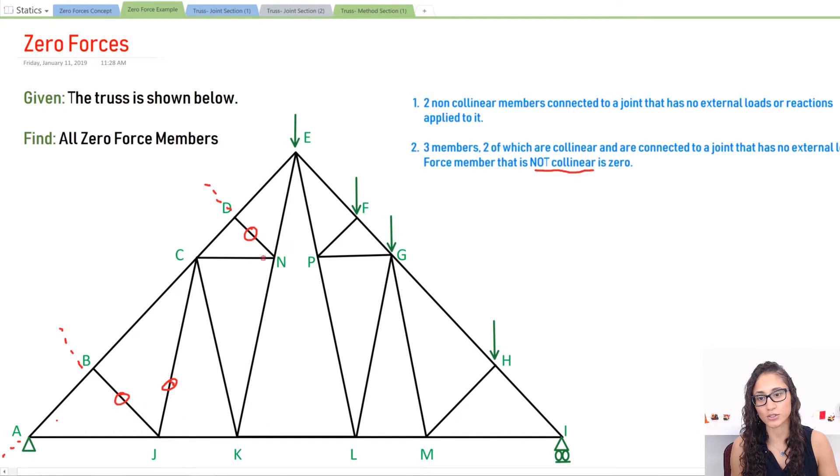Okay, next thing, let's look at N. I have this member is zero, correct? And now I have NE and NK are collinear. I have three members: CN, NE, and NK. CN is non-collinear, so this member is going to be zero.